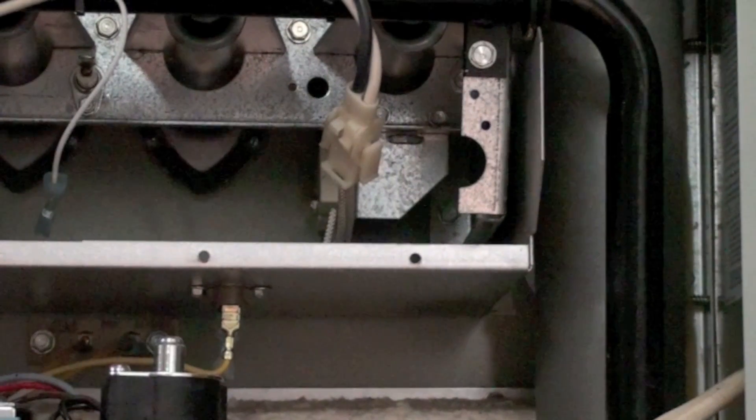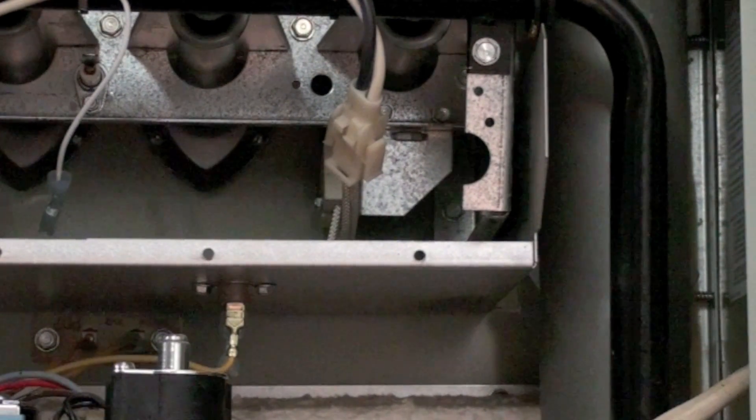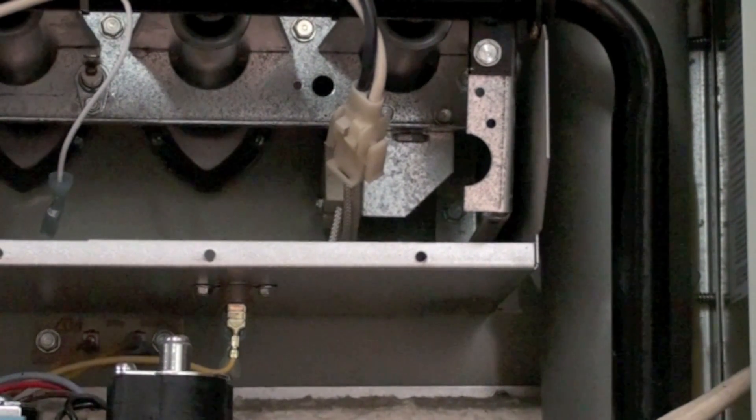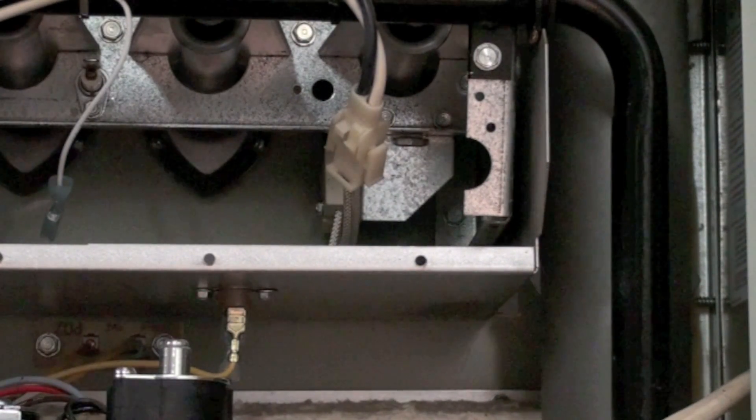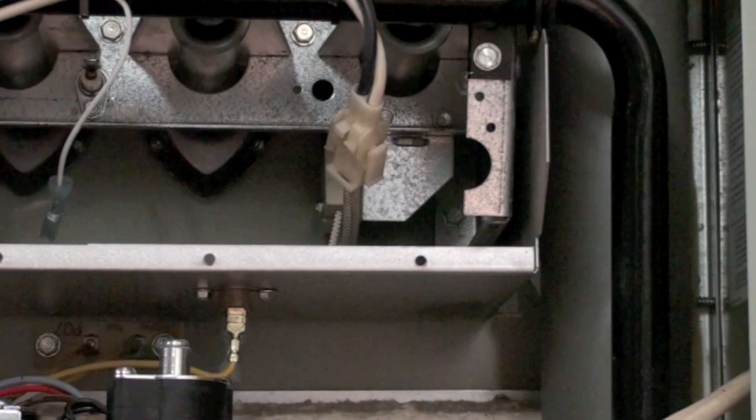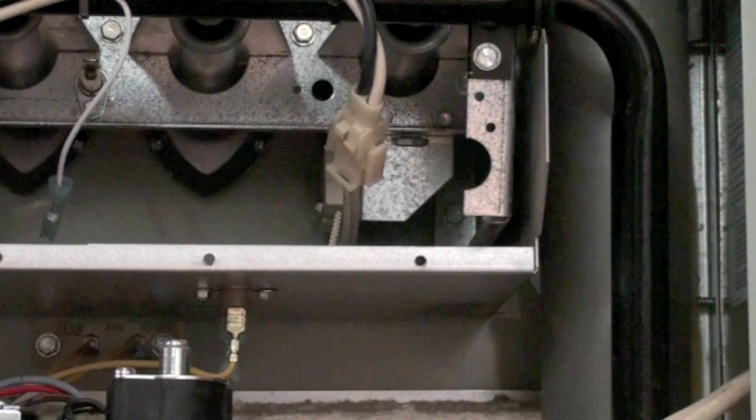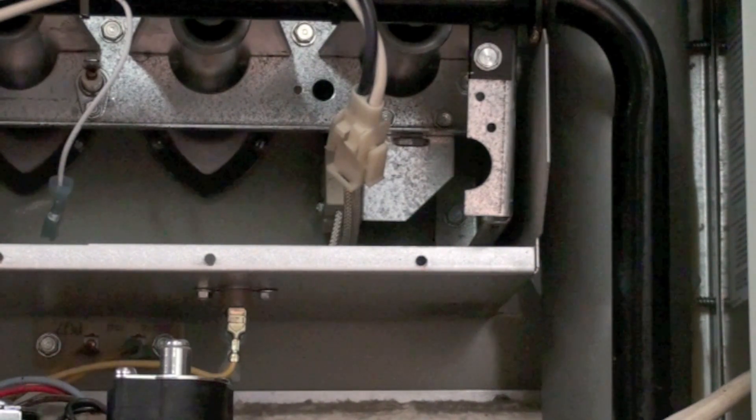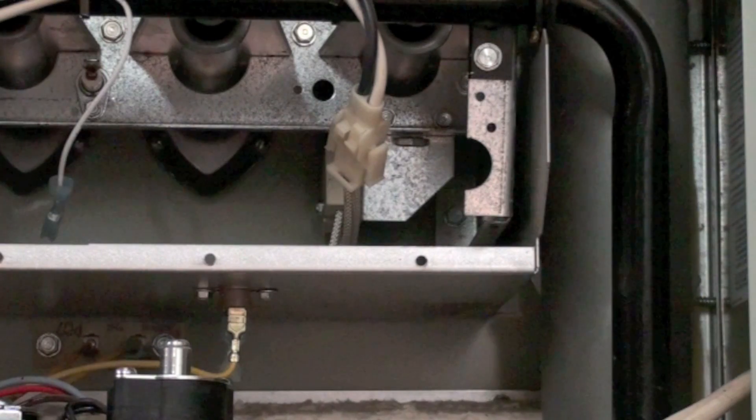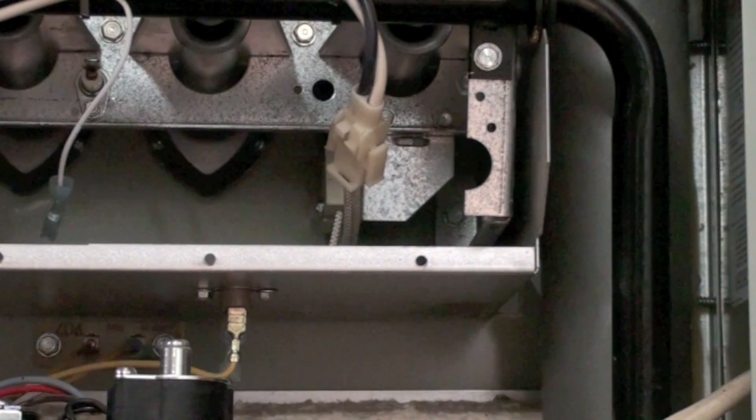So if you have the symptoms that you get a glow on one side of the furnace, the burners light and then they shut off and it does that several times, pull out the flame rod, clean it up, put it back in.